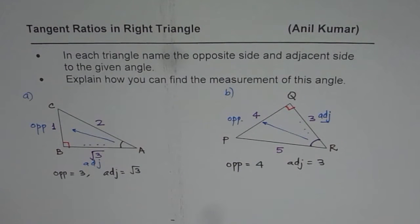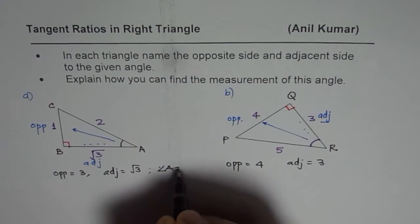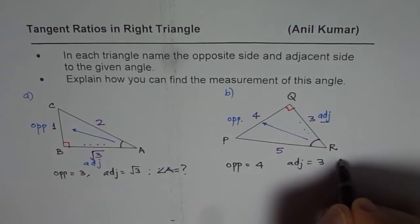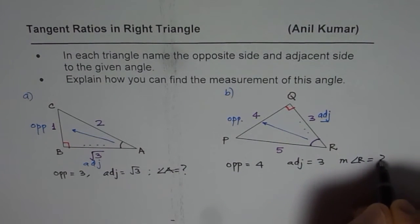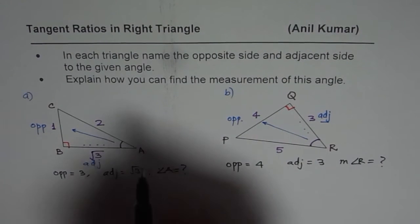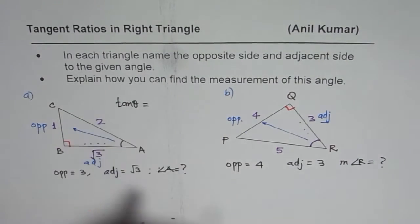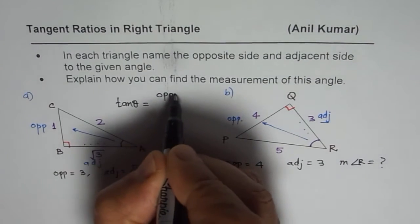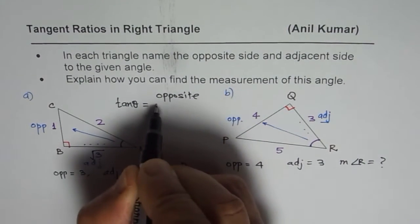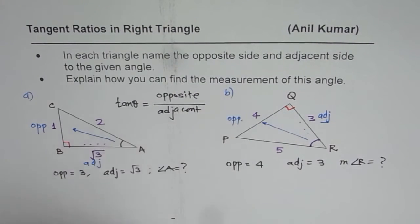Part B is: explain how you can find the measurement of this angle — that means angle A, and also angle R. We have just learned what the tangent ratio is. Tan theta in general is equal to opposite over adjacent. That is tan theta.